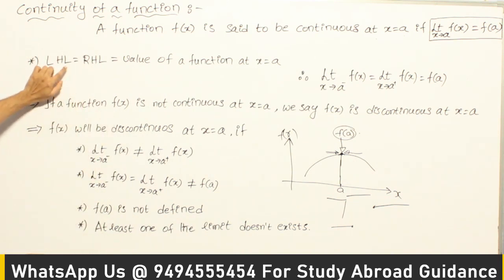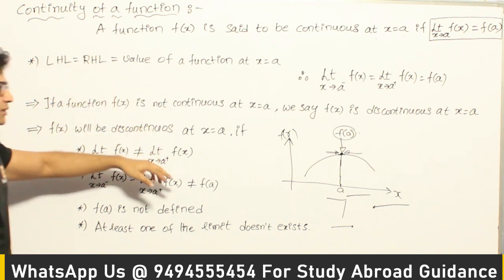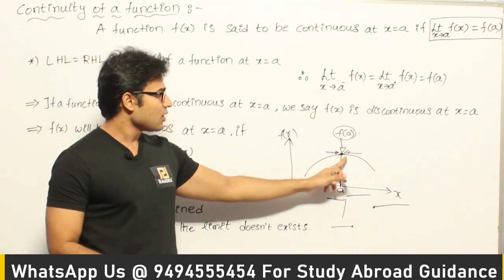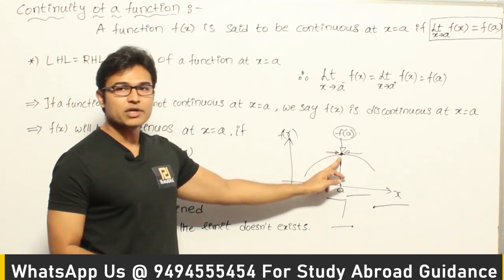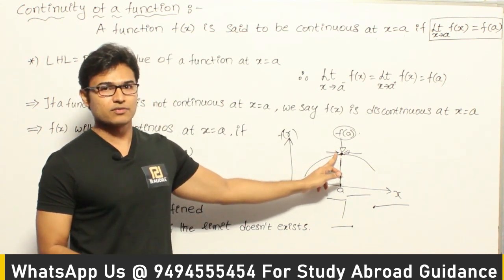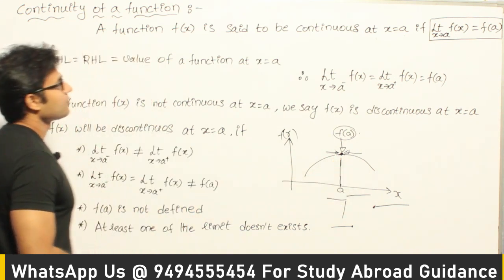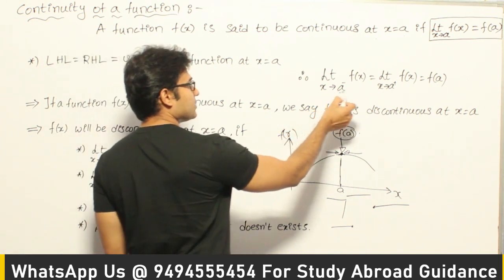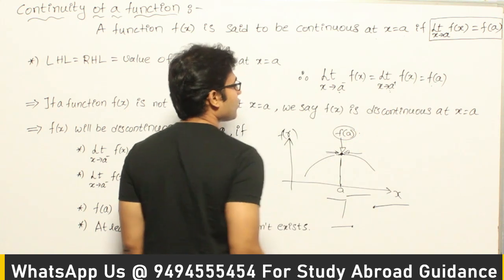Another way of saying it: the left-hand limit equals the right-hand limit equals the value of the function at x = a. Either you take the left side or the right side or at that point — you move a small fraction to the left, a small fraction to the right, and check its value. This is also written as: limit x tends to a⁻ equals limit x tends to a⁺ equals f(a).